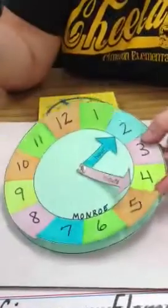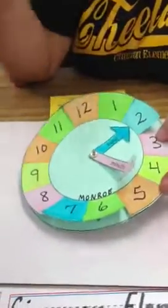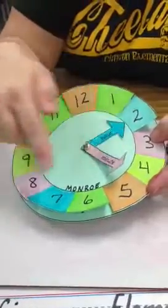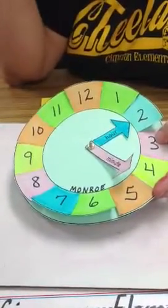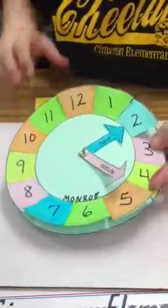Whereas the minute hand is older. He's longer, taller. So he counts by ones and he can go all the way to 59, or 0 to 59.